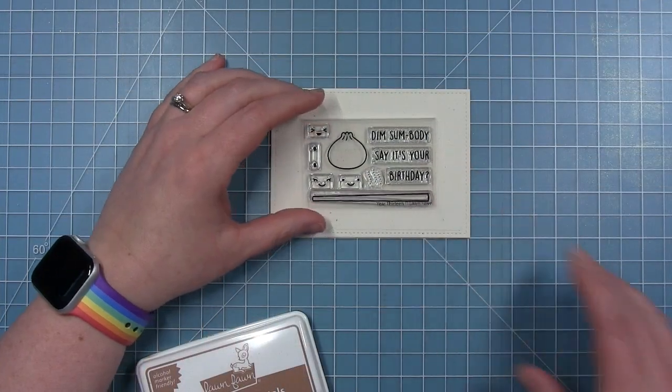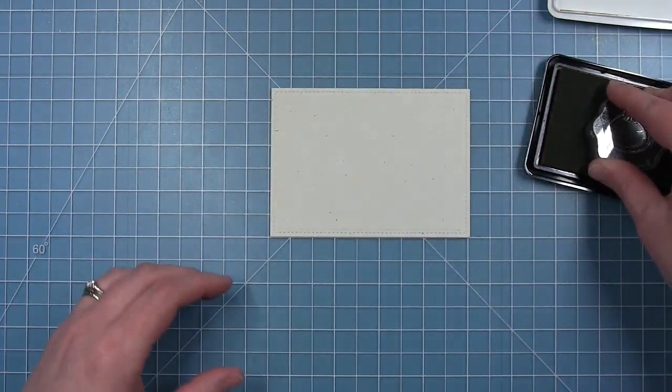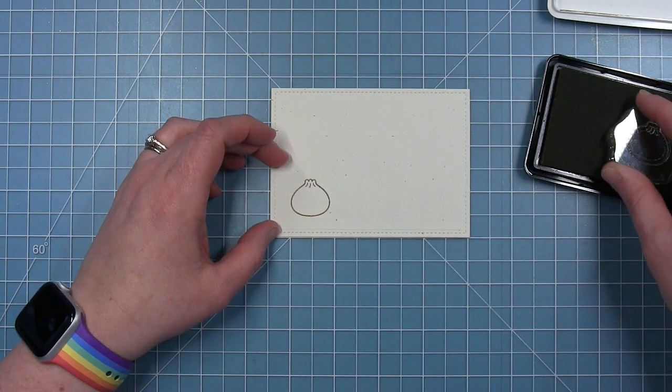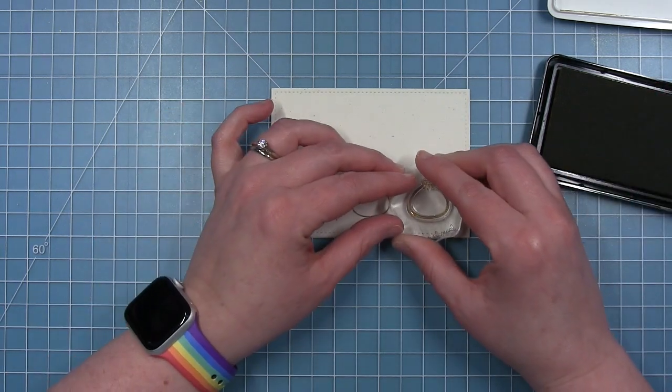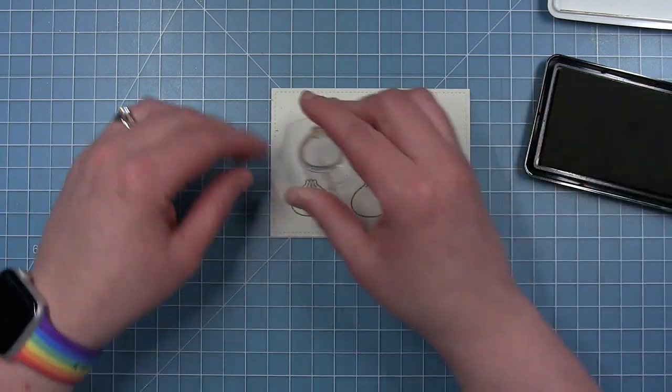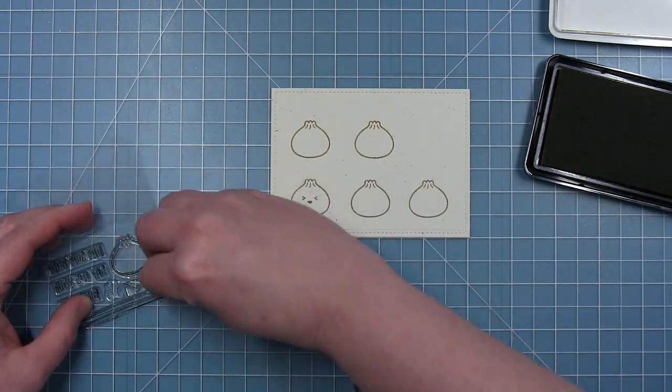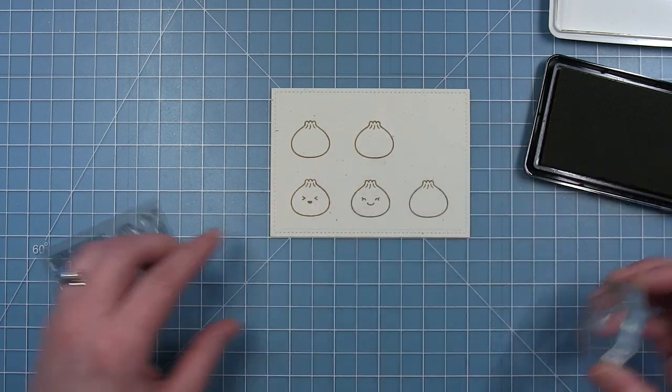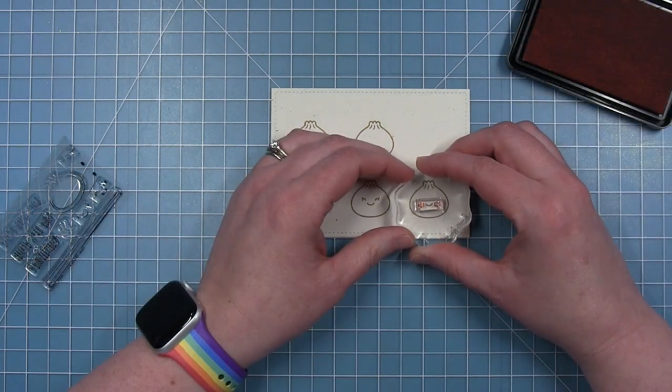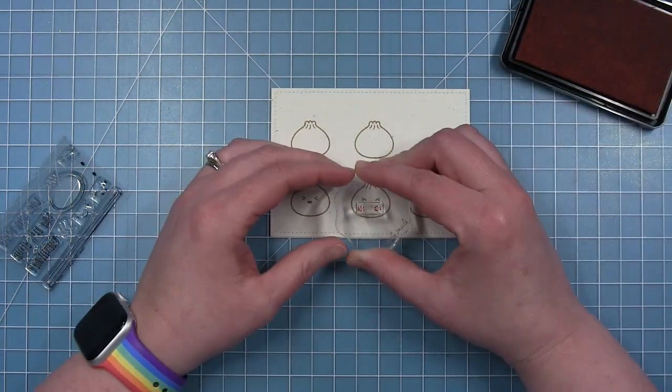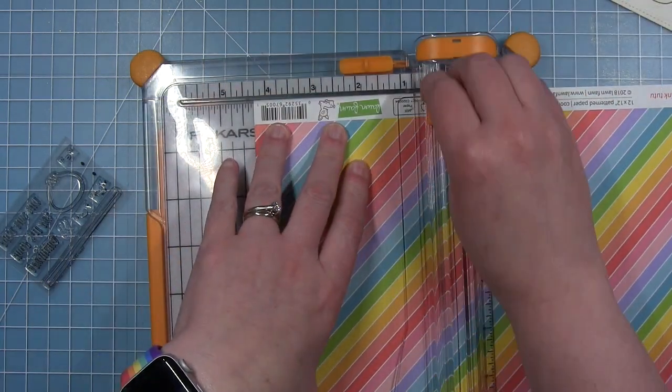Now I'm going to create a card using this stamp set. I'm not doing any coloring on my steam buns today. I'm going to stamp them in dough ink on some speckled eggshell cardstock, letting the speckled eggshell be the color. I'm stamping out four or five of these, using four in my final design, stamping the little faces in that same dough ink. I'm making sure I have one of each different face, then using peachy keen ink for the cheeks.